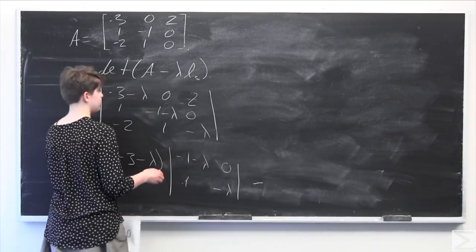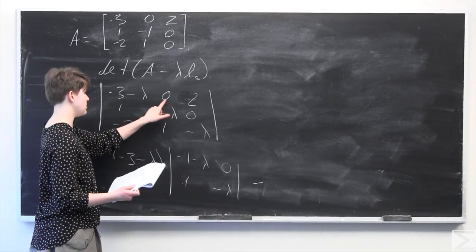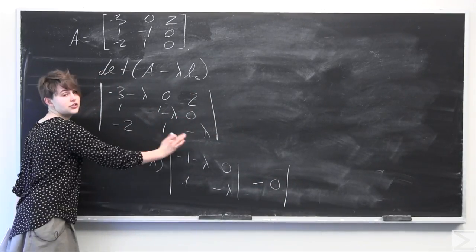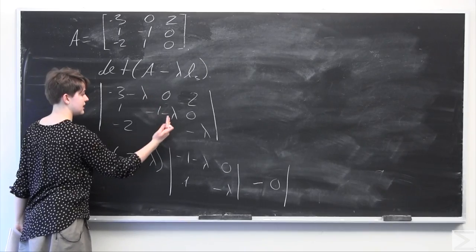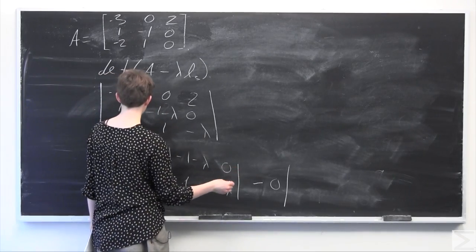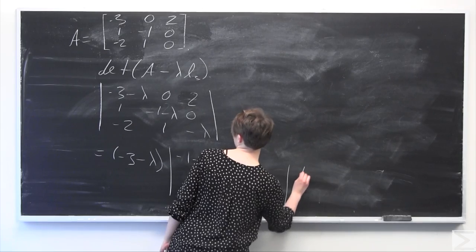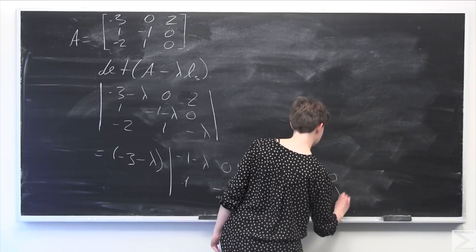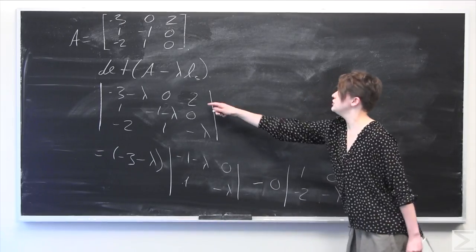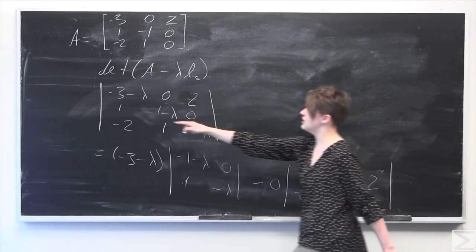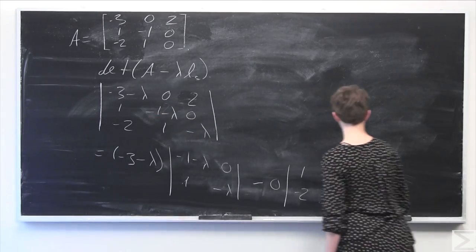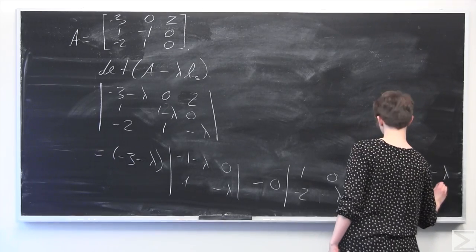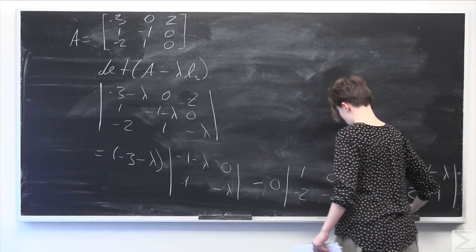Using a cofactor expansion, this equals negative 3 minus lambda times the determinant of the lower-right 2 by 2 matrix — negative 1 minus lambda, 0; and 1 minus lambda — minus 0 times the relevant minor, plus 2 times the determinant of the lower-left corner matrix: 1, negative 1 minus lambda, negative 2, and 1.